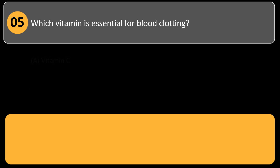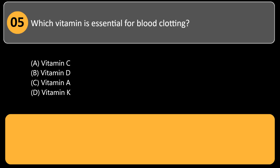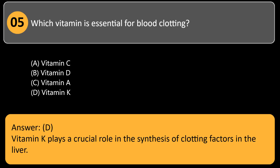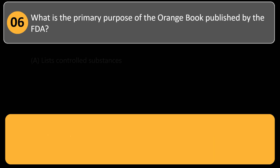Which vitamin is essential for blood clotting? A) vitamin C, B) vitamin D, C) vitamin A, D) vitamin K. Answer: D. Vitamin K plays a crucial role in the synthesis of clotting factors in the liver.